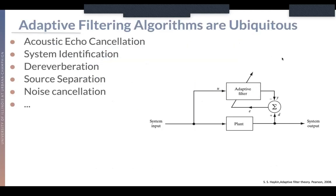Adaptive filtering algorithms are everywhere in audio processing. They have applications from echo cancellation to system identification, reverberation, source separation, and noise cancellation. They have uses in basically every multimedia system.